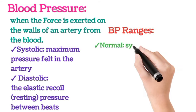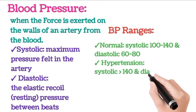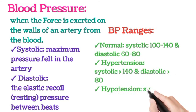Blood pressure ranges. Normal: Systolic 100 to 140 and diastolic 60 to 80. Hypertension: Systolic greater than 140 and diastolic greater than 80.